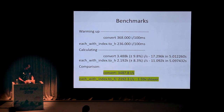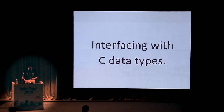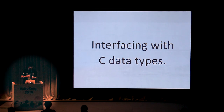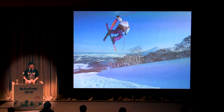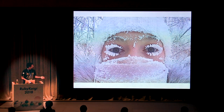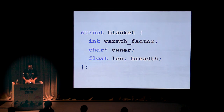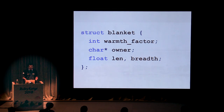Speed is not the only reason why Rubex exists — one of the major reasons is also interfacing with C data types. To give you an example, imagine that you've gone skiing to Hokkaido. It's really cold over there, and you want to wrap a blanket around yourself. But the only way to wrap a blanket is to wrap it inside a Ruby structure and then access it through a Ruby object, because you're a Rubyist.